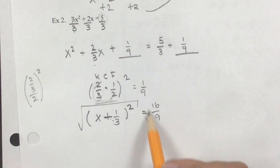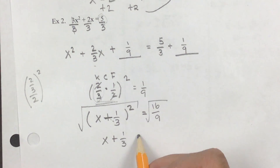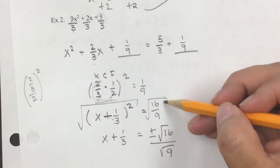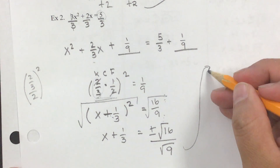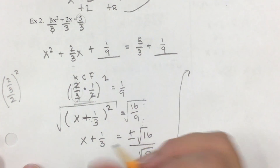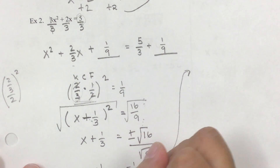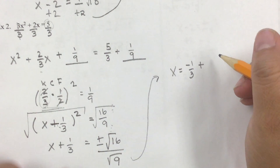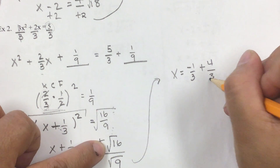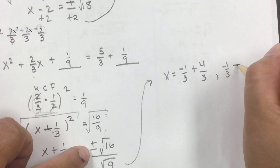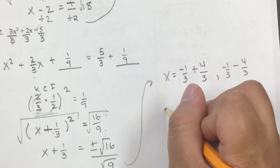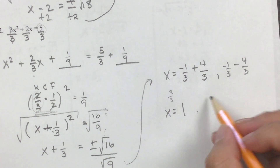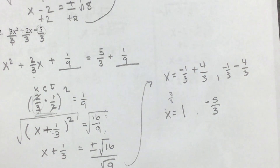Now do the square root of both sides: x plus 1/3 equals plus or minus the square root of 16 divided by the square root of 9, which simplifies since both are perfect squares. Subtract 1/3 from both sides: x equals negative 1/3 plus or minus 4/3. So one answer is 3/3 which is 1, and the other is negative 1/3 minus 4/3 which is negative 5/3.